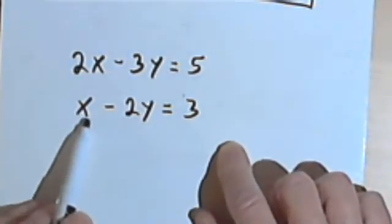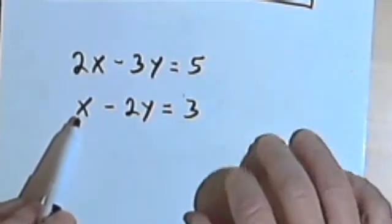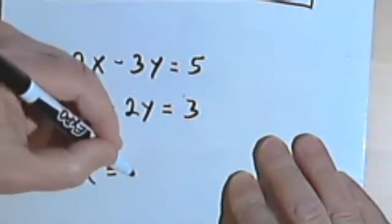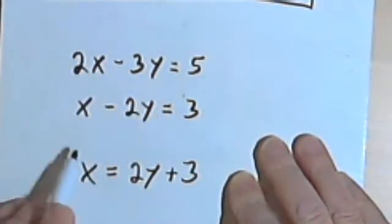Or you could take the second equation, since we've just got an x by itself with no coefficient, and turn that into x equals 2y plus 3. In other words, you're solving the equation for x.